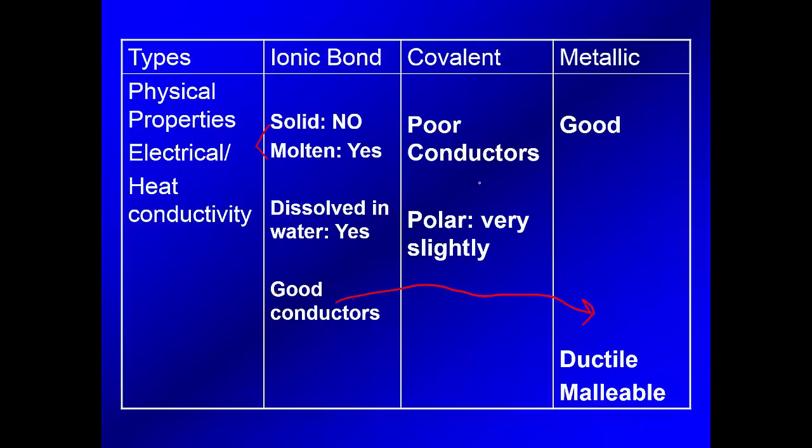So covalents are poor conductors. They vary slightly. Polar might a little bit slightly. That's why I get out of the water when there's electricity. But overall, we say covalents are poor conductors. Metals. They're good conductors. They're ductile and malleable. So those are again, those vocab. Ductile, you can pull it into a wire. Malleable, you can bend it into a sheet.